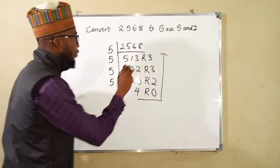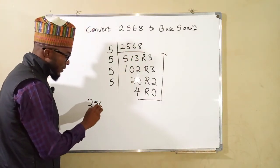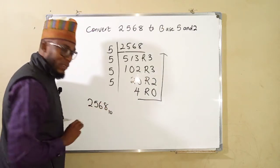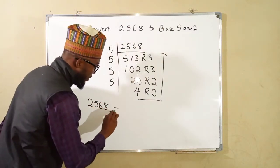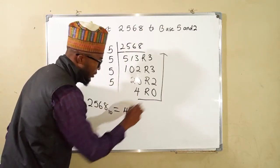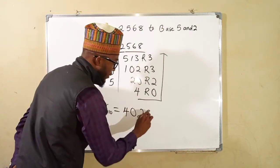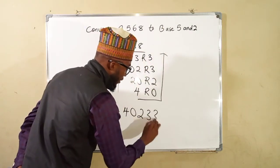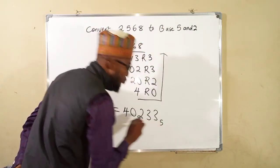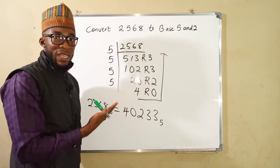And conclude by saying 2568 which is a number in base 10, this is the same thing as you start with this number 4, 0, 2, 3, and finally 3 but this number is in base 5. So they are exactly the same just that they are in different bases.